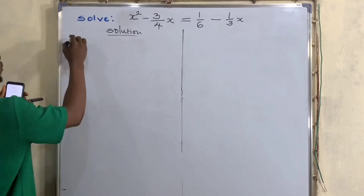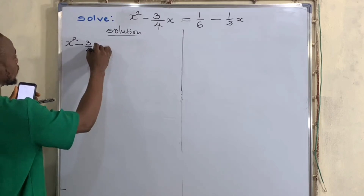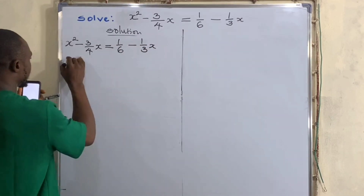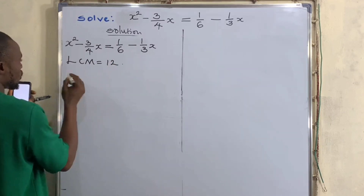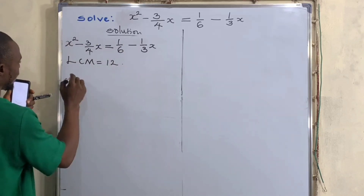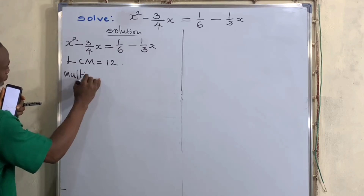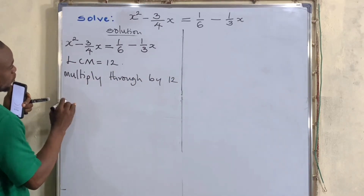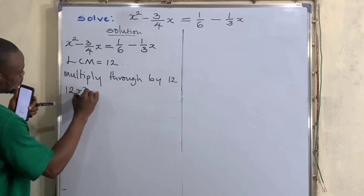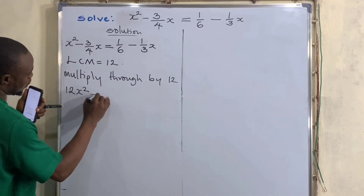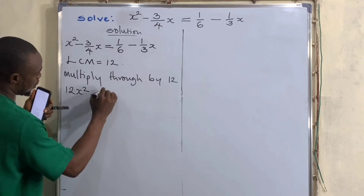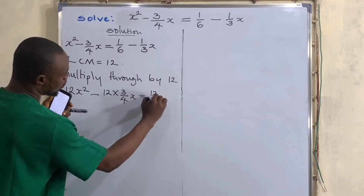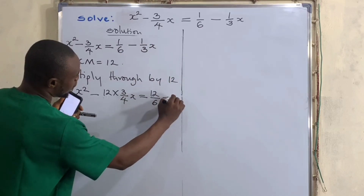So the equation is x squared minus 3 over 4x equal to 1 over 6 minus 1 over 3x. The LCM is 12, so the next thing is to multiply through by 12 — multiply 12 by the entire terms of the equation. Multiplying this equation by 12 gives us 12 times x squared, which is 12x squared. Then 12 times 3 over 4x, and on the right side 12 times 1 over 6 gives 12 over 6, and 12 times 1 over 3x gives 12 over 3x.